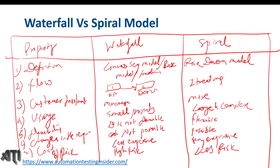So those are the different properties by which we can differentiate the waterfall model and the spiral model. I'll put the notes clearly in my blog at automationtestinginsider.com in the coming days. Thank you for watching — that's all for today, thanks a lot, bye.